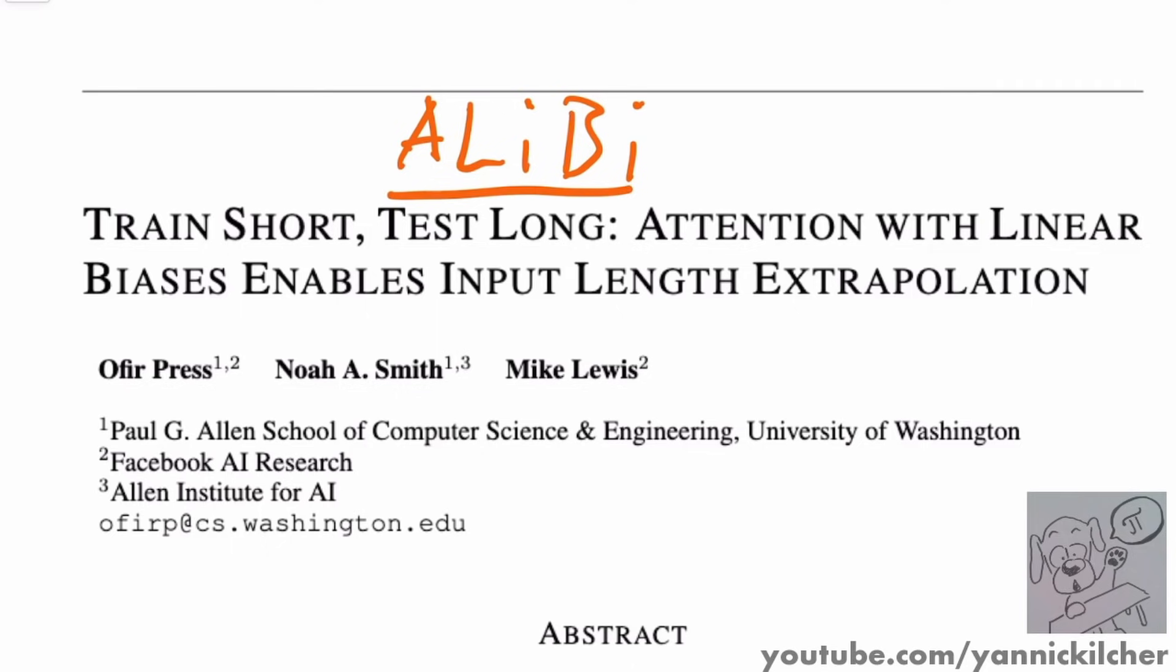So on a high level, this paper replaces the position encodings or position embeddings of transformers by a new, very simple system that enables these transformers to extrapolate to much longer sequences at inference time than they have been trained on. You can train on quite short sequences, and then inference will not suffer, will not degrade, even if the inference sequence length is much longer than the training sequence length. This goes from two times longer, to 10 times longer, to more.